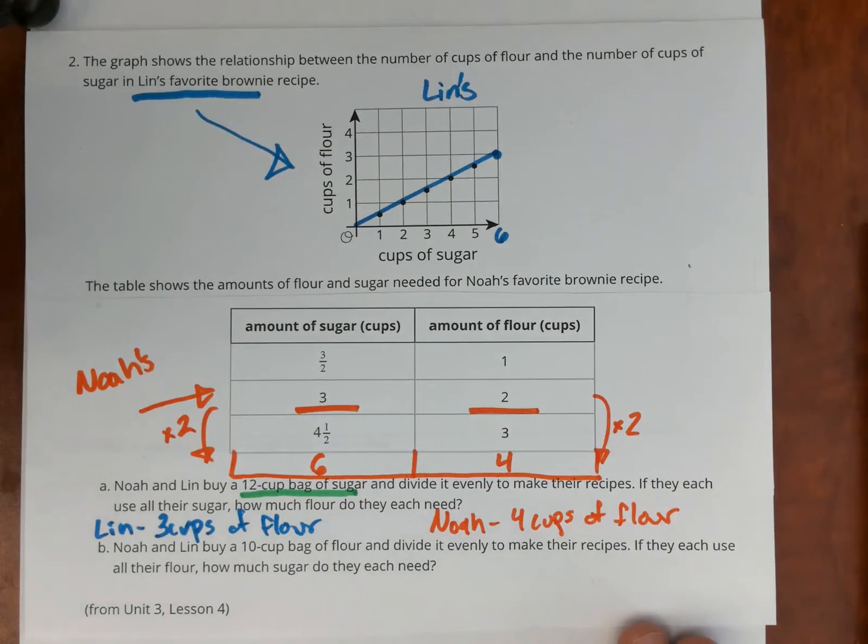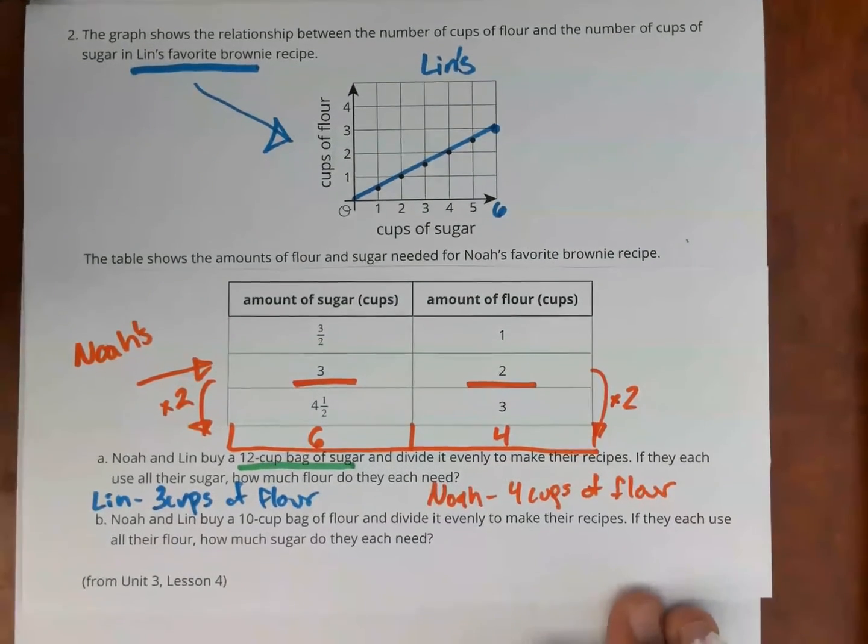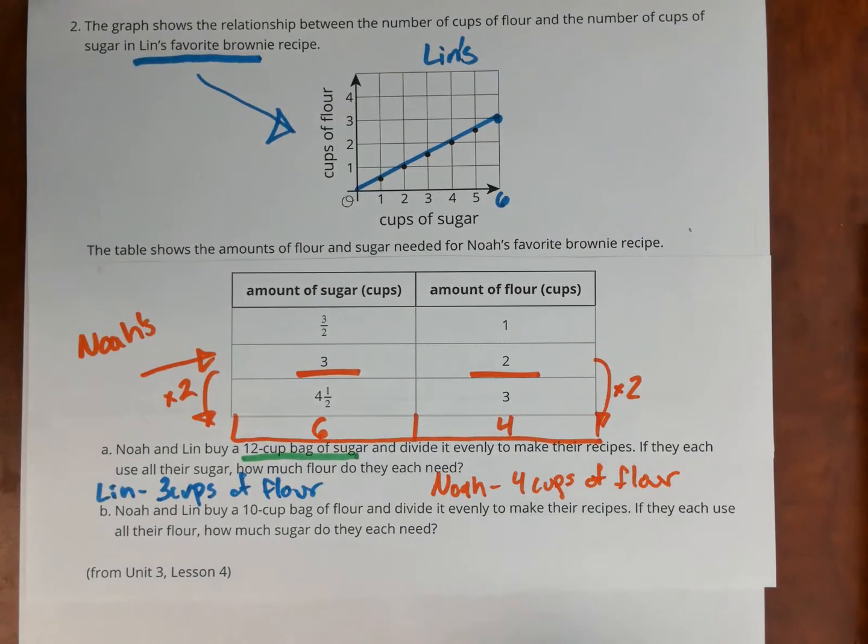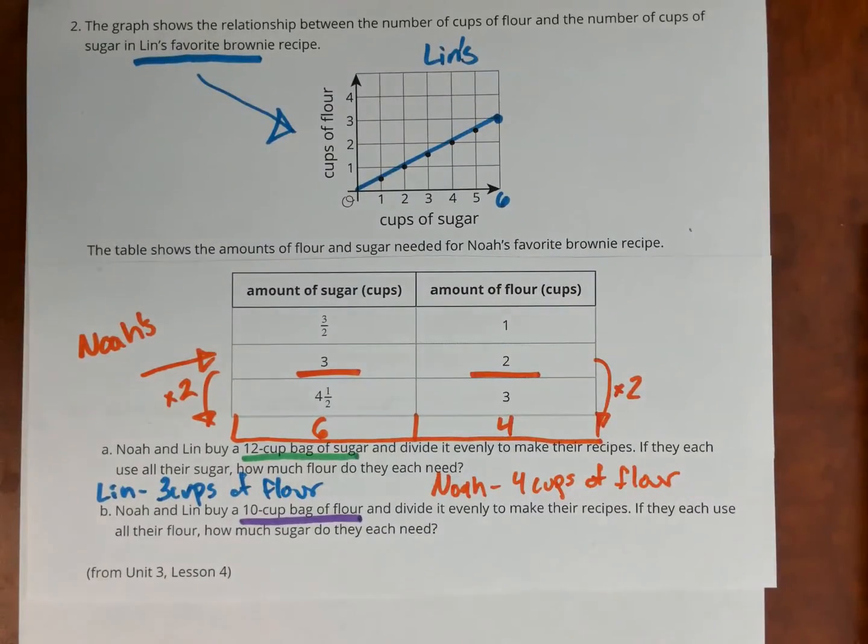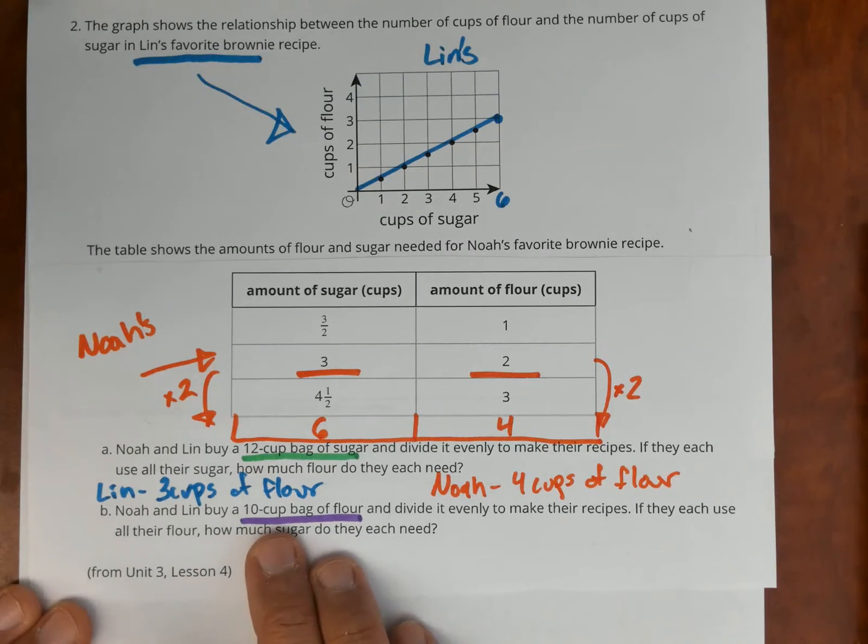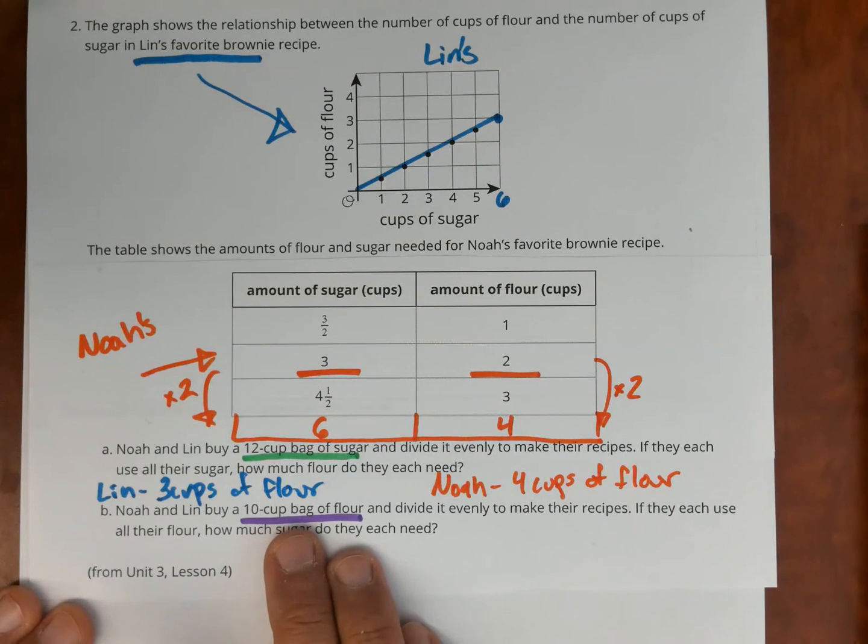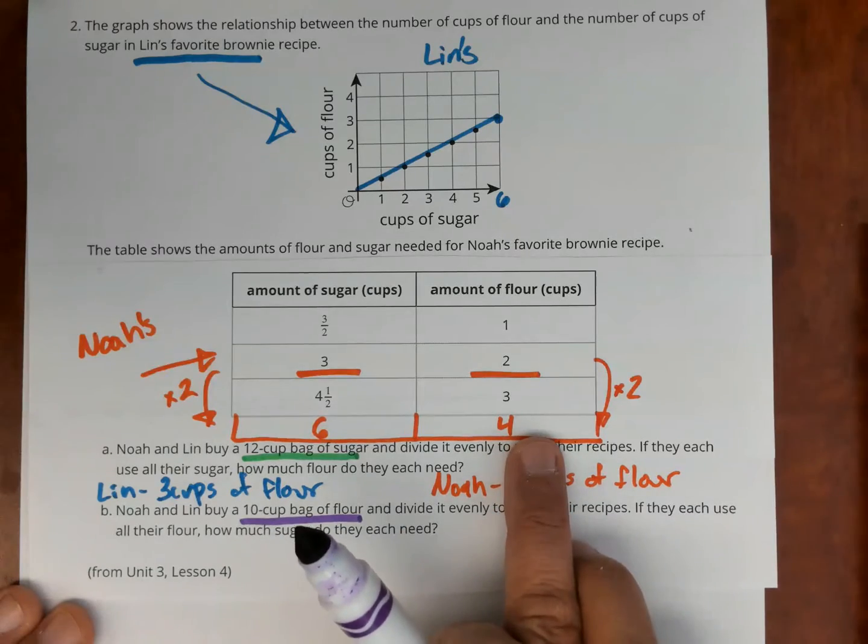Now for part B, Noah and Lynn buy a five cup bag of flour and divide it evenly to make the recipes. Notice here, this part is asking us for cups of flour. And I'm using a different color there because that's a different thing in the table. If they each use all their flour, how much sugar will they need? So I can do the same thing as before, but now I need to notice that I'm looking for cups of flour. So if they divide 10 cups of flour evenly, then each one will use five cups of flour.